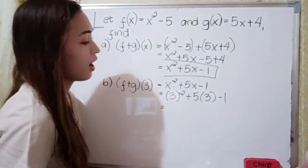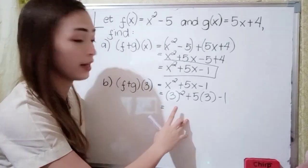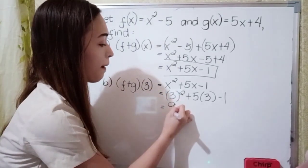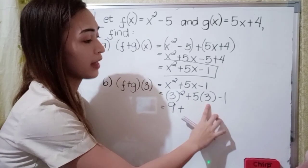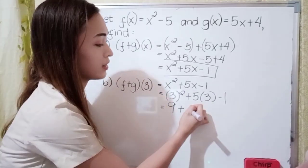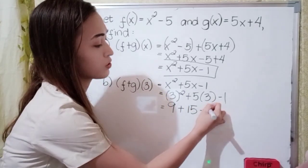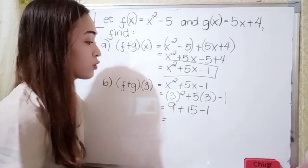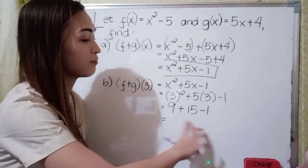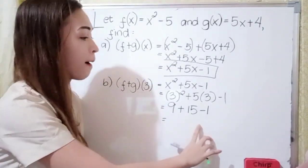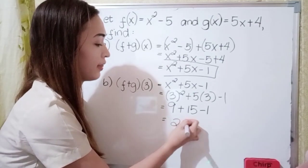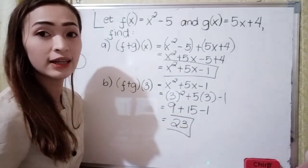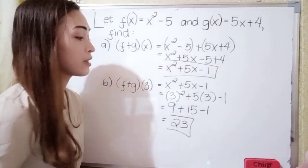So what is 3 squared? 3 squared is 9, plus 5 times 3 is 15, minus 1. Then proceed to the operation: 9 plus 15 is 24, minus 1 is 23. So the final answer in letter b is 23.